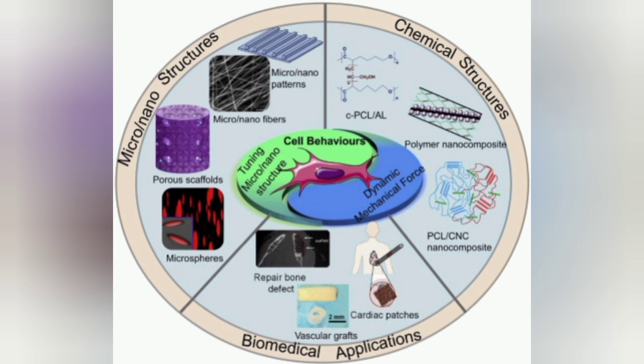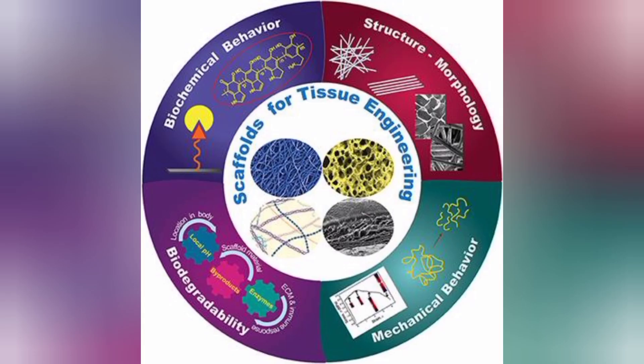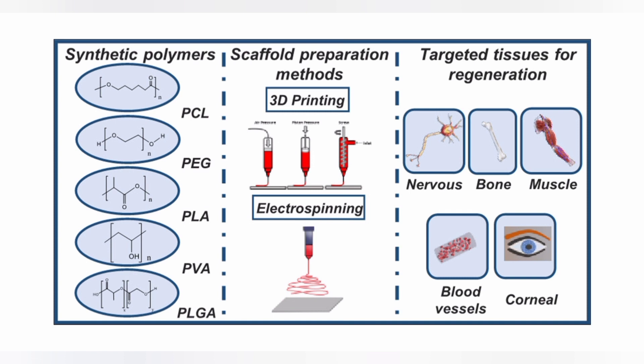Successful implantation requires compatibility of the scaffold with the host immunity and functional integration with the body. Some biomaterials are extensively applied across a large range of medical applications and characterized by good biocompatibility: these are PLA, polyglycolic acid (PGA) and polydioxanone.